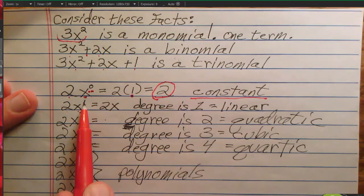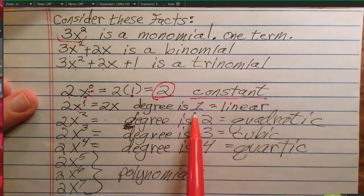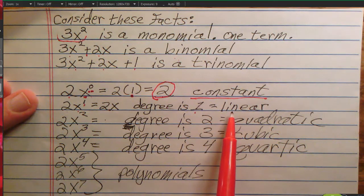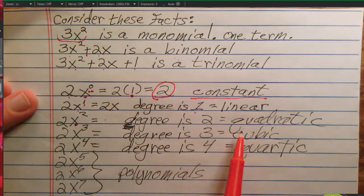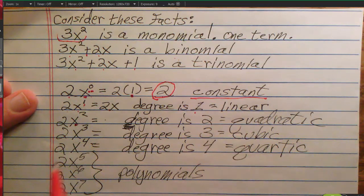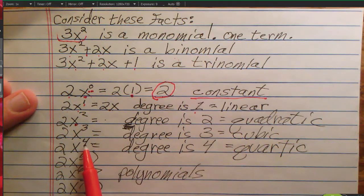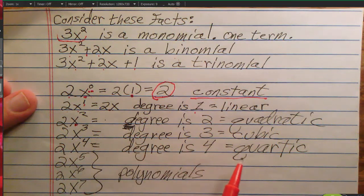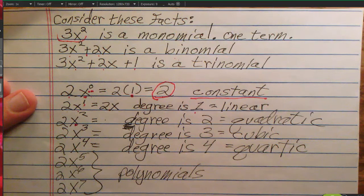This is 2x to the 1. x to the 1 is just x, so it's 2x. This term has degree 1, so it's called linear. This term has degree 2, it's called quadratic. This term has degree 3, it's called cubic. This term has degree 4, it's called quartic. Polynomials of degree 5, 6, 7, or higher are just called polynomials. They don't have a special name.